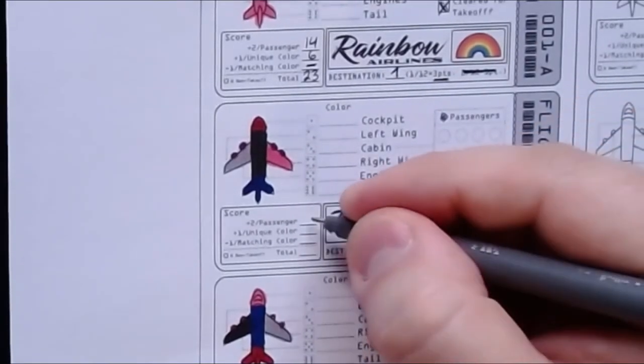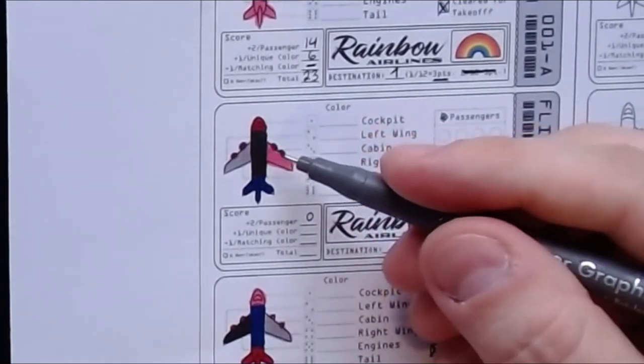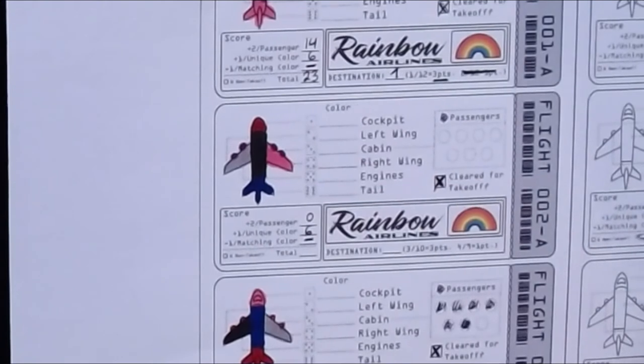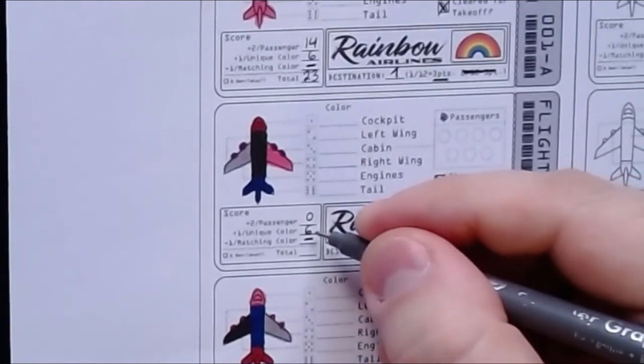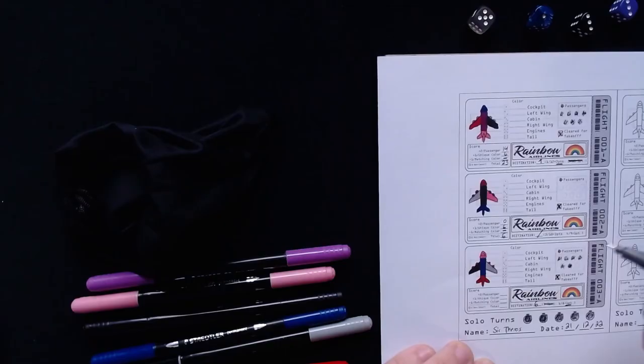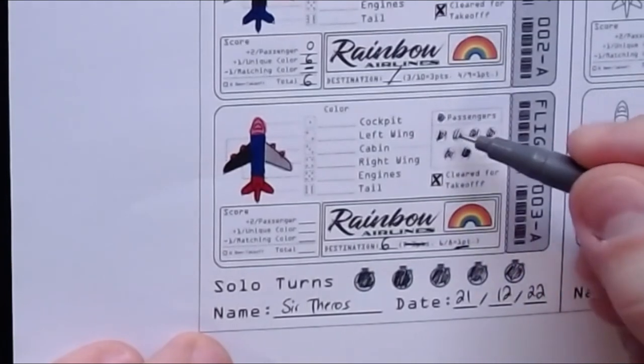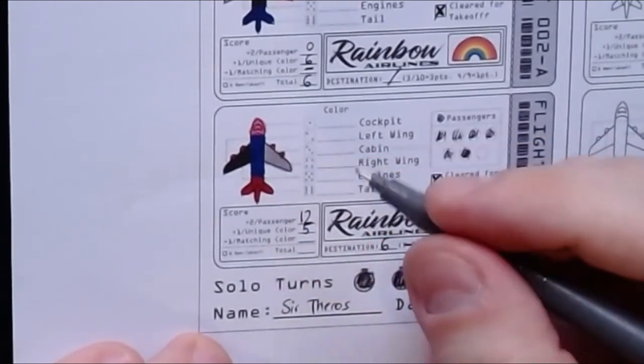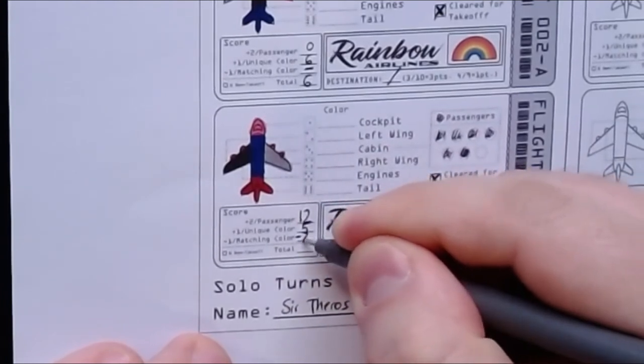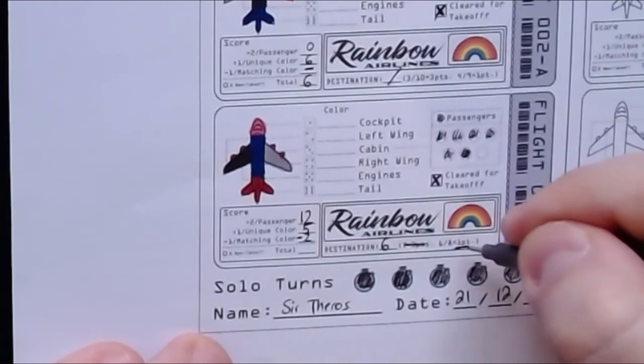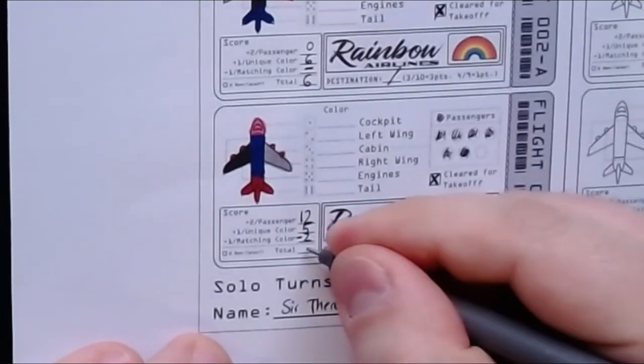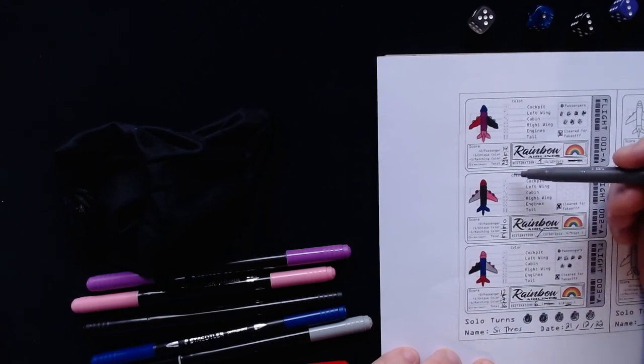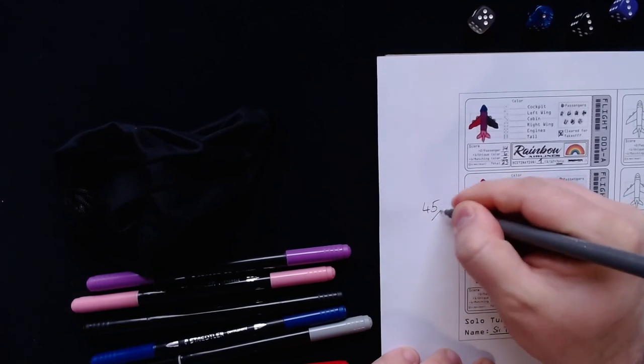Then here we don't have any passengers. Unique colors, we have one, two, three, four. Wait, these are all unique colors too. Great. So that is six. We don't have any matching colors, but we also don't have a destination. So we only get six points. That is pretty bad. And then here, let's see, plus two for each passenger. That is two, four, six. That's 12 points. Then plus one for each unique color. We have five unique colors and we have two matching colors, the two reds here. So that's minus two. And we have one point here. So that's 12, 10, 15, that's 16 points. So there's no space to put that, but I'll just put it here on the side. So together we have nine, 15, 35, 45 points. That is our final score.